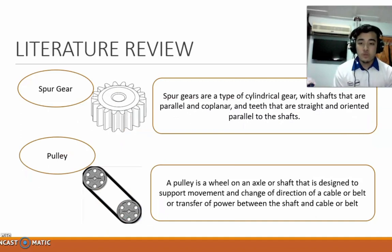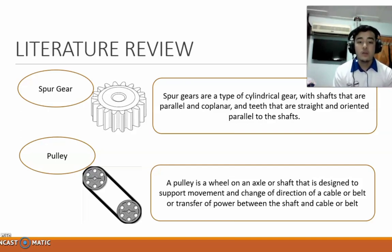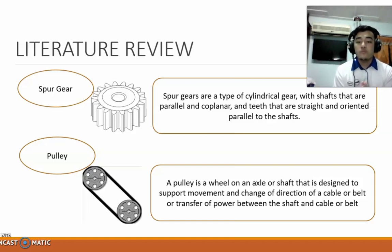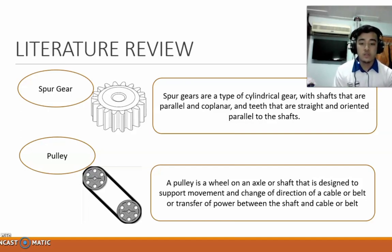This is the list of equipment that will be added to our design. First, spur gears — a type of cylindrical gear with shafts that are parallel and coplanar and teeth that are straight and oriented parallel to the shafts. Second, a pulley — a wheel on an axle or shaft designed to support movement and change of direction of a cable or belt, or transfer of power between the shaft and the cable.